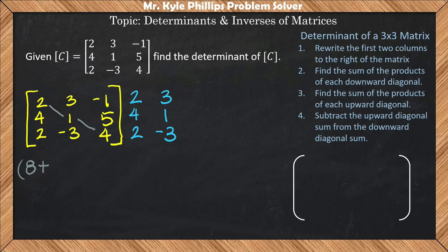So we're going to add, because it says find the sum, 3 times 5 times 2 is going to give us 30. And then negative 1 times 4 times negative 3 is going to give us 12.